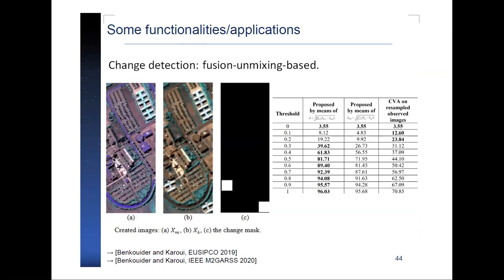Another functionality is change detection using unmixing-based techniques. Since unmixing provides abundance fraction maps, applying it to two images of the same area acquired at different times allows detecting changes by analyzing the obtained abundance maps through absolute difference. In one example, two images of the same region with different spectral and spatial resolutions were used, and after a fusion-unmixing method, changes were detected either from abundance maps or from synthesized images with matched resolutions.